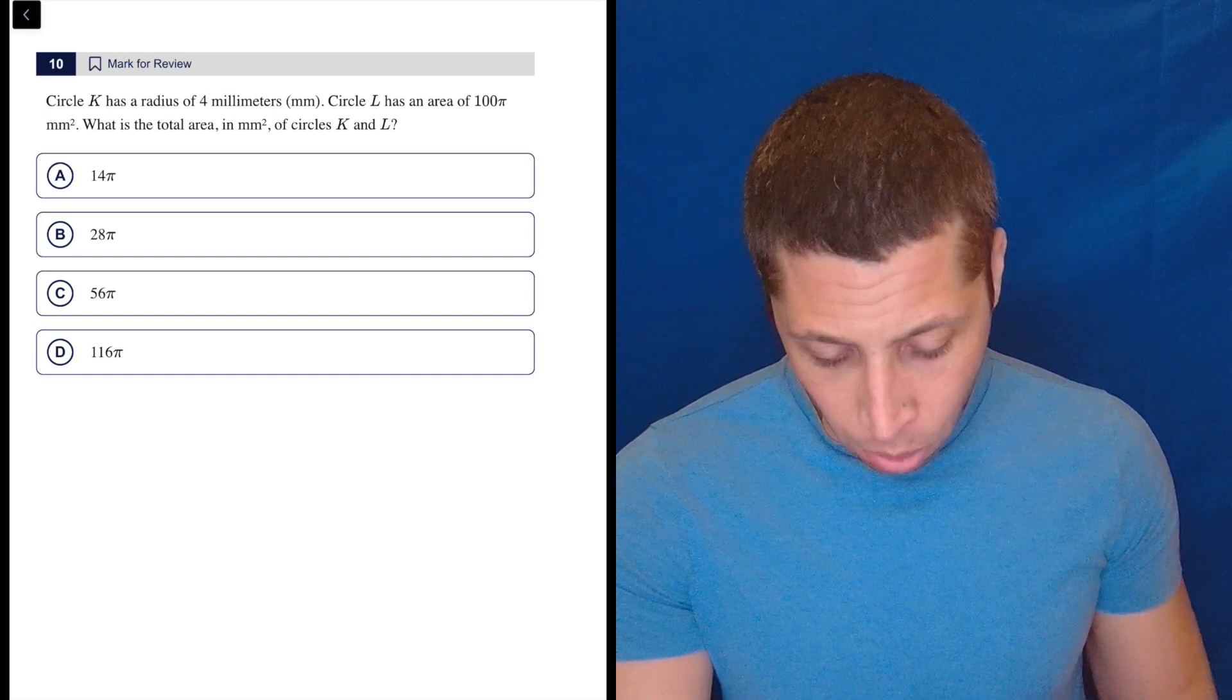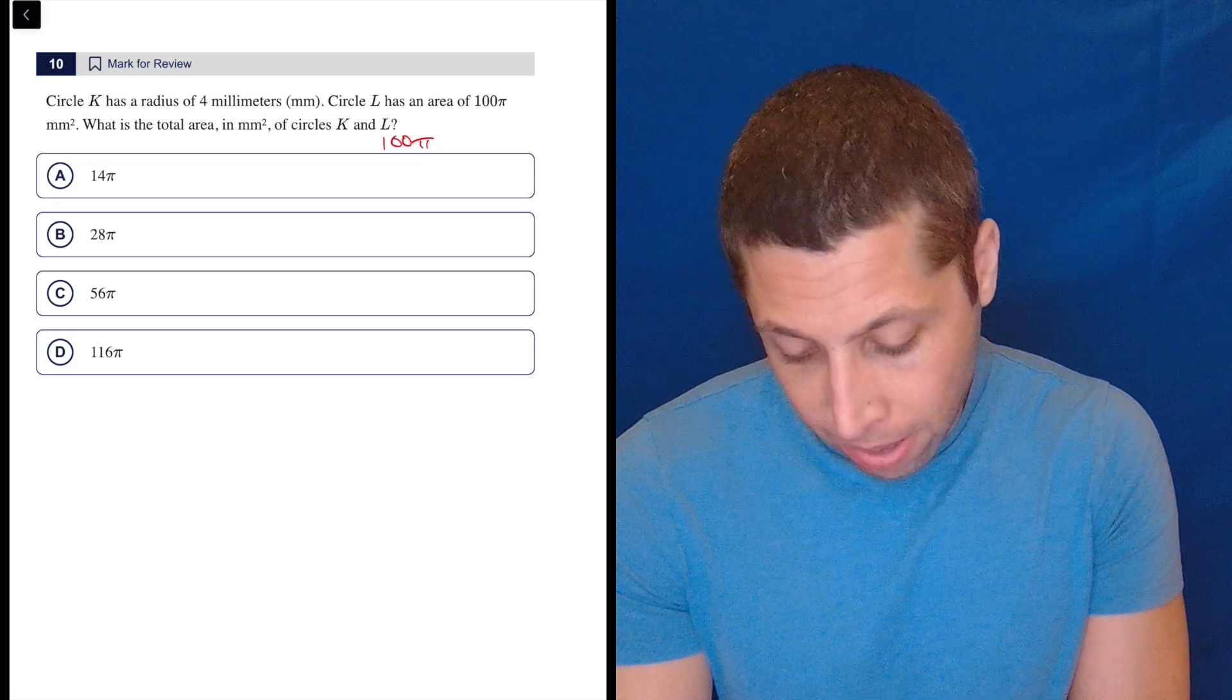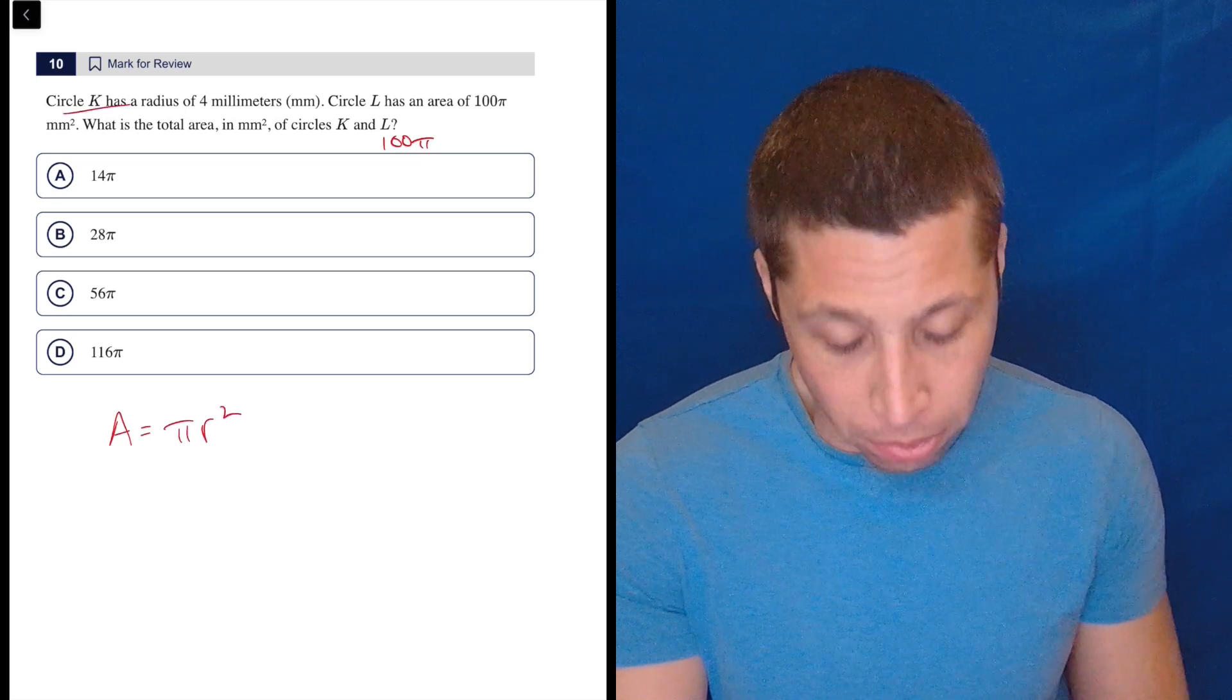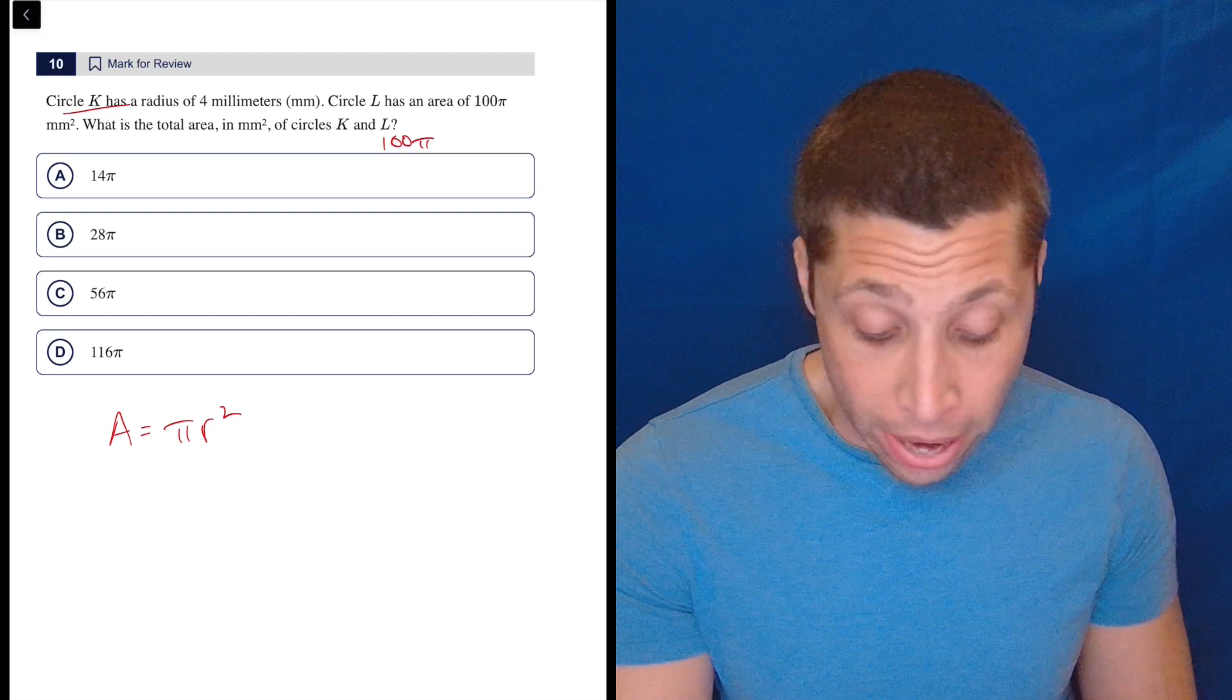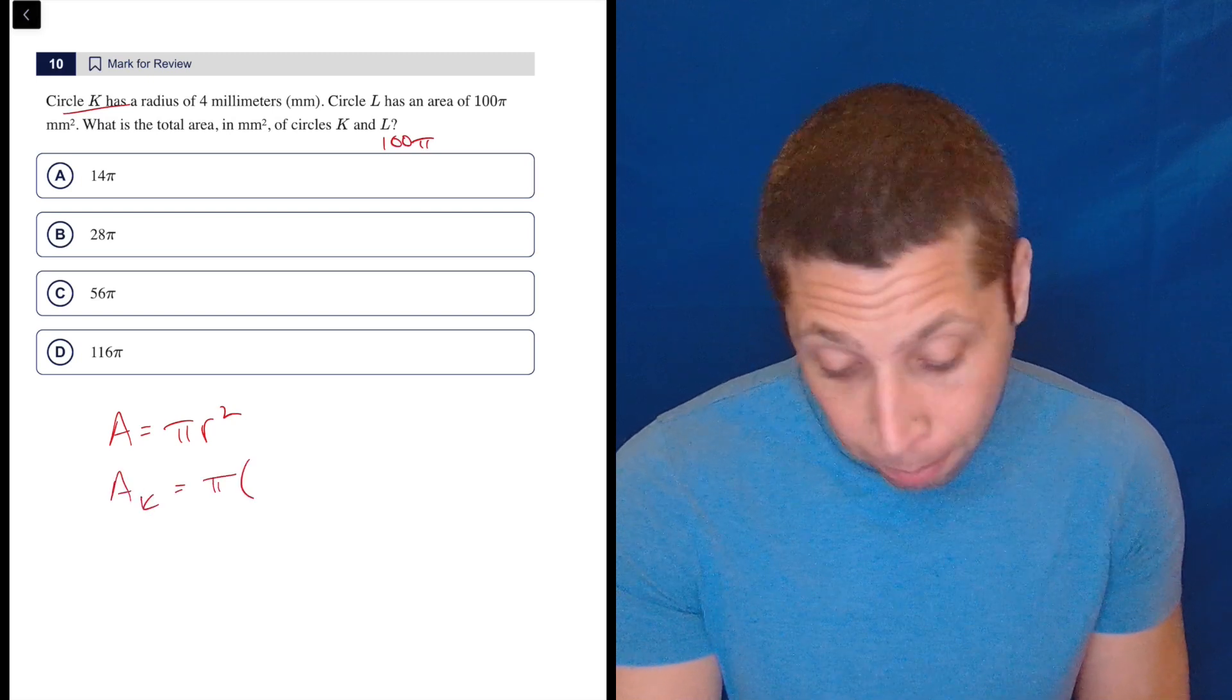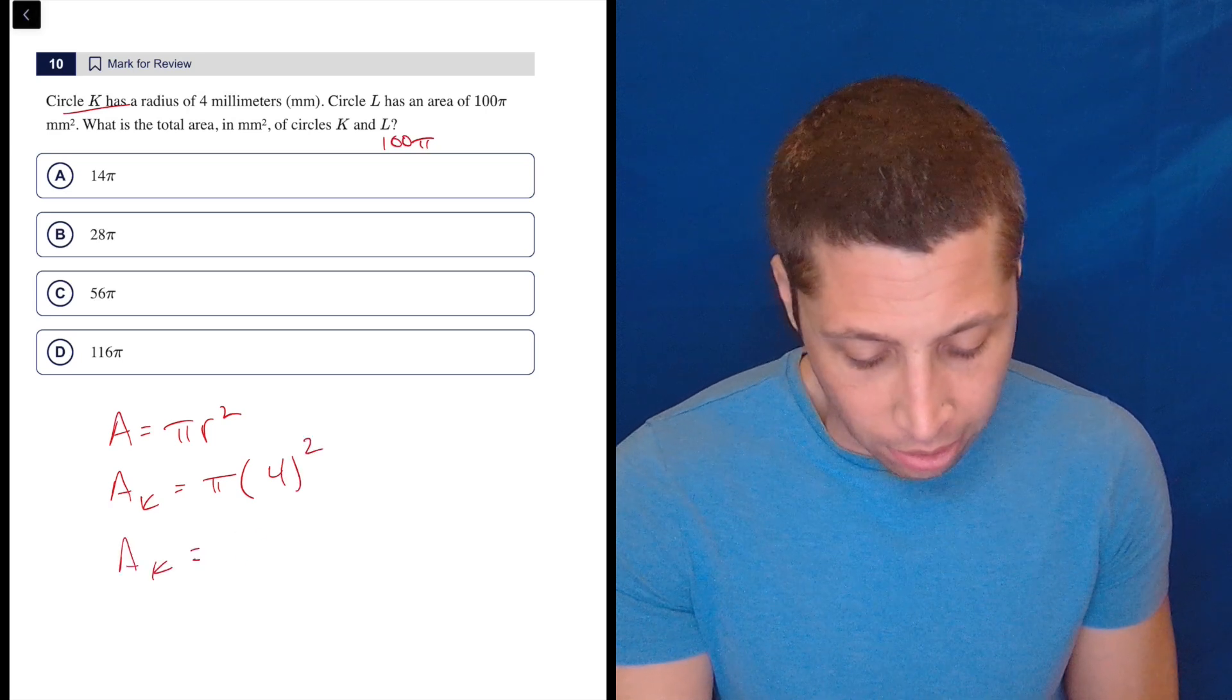Well, again, total is just add them up. We know L is 100π. Let's find the area of circle K. It's in the reference chart, but you should know from memory - my advice - that the area of a circle is πr². So the area of K is going to be π times, well, the radius is four. They just tell us. So that's going to be 16π.